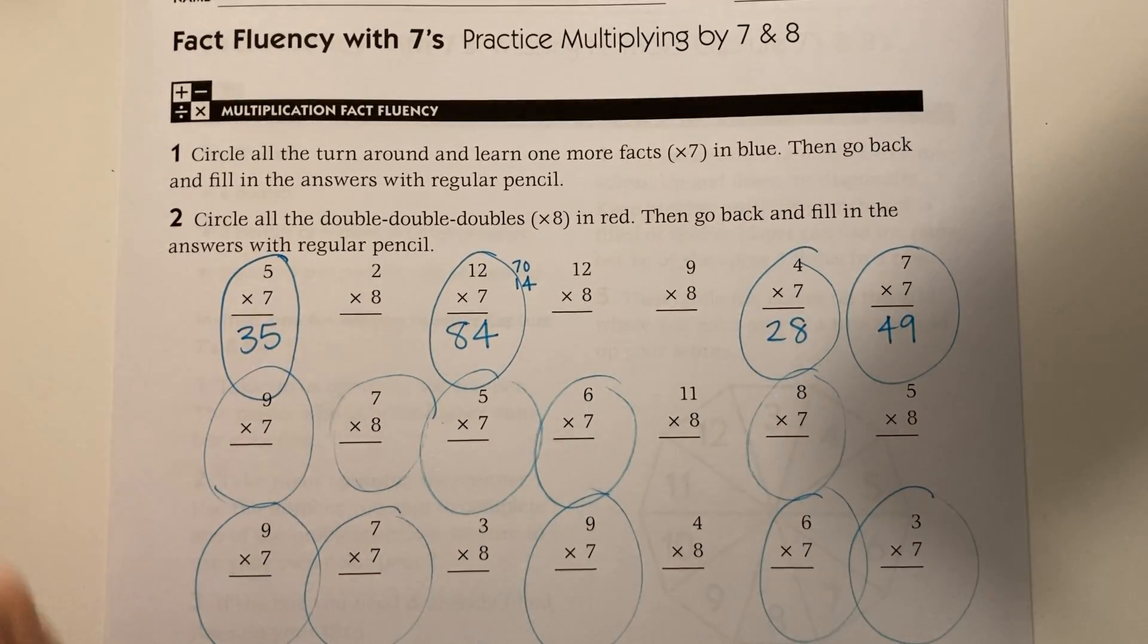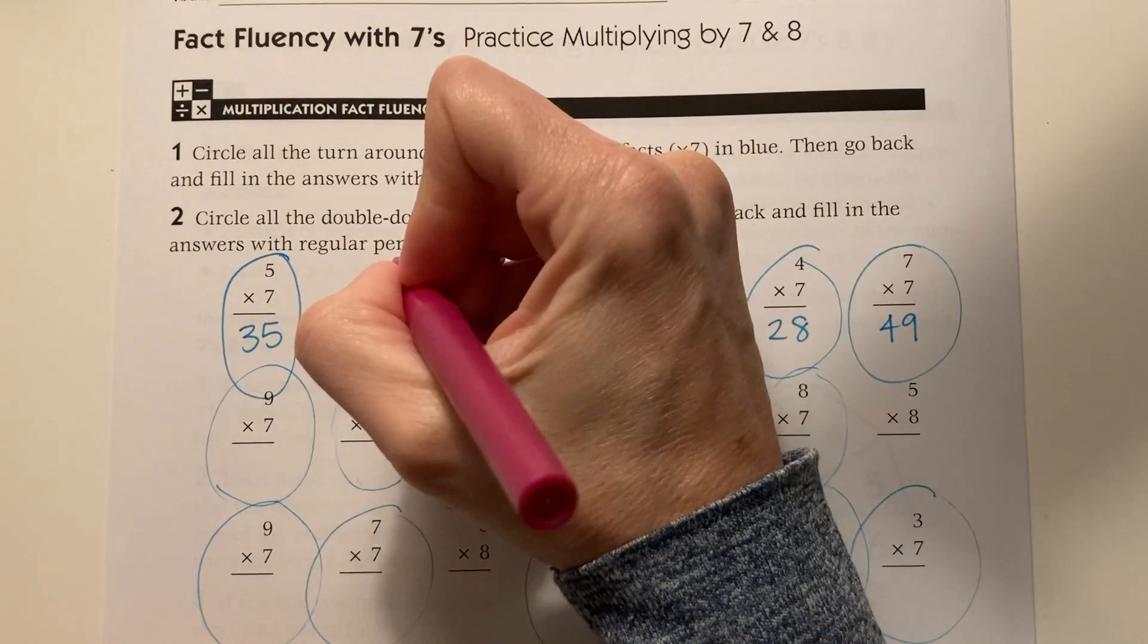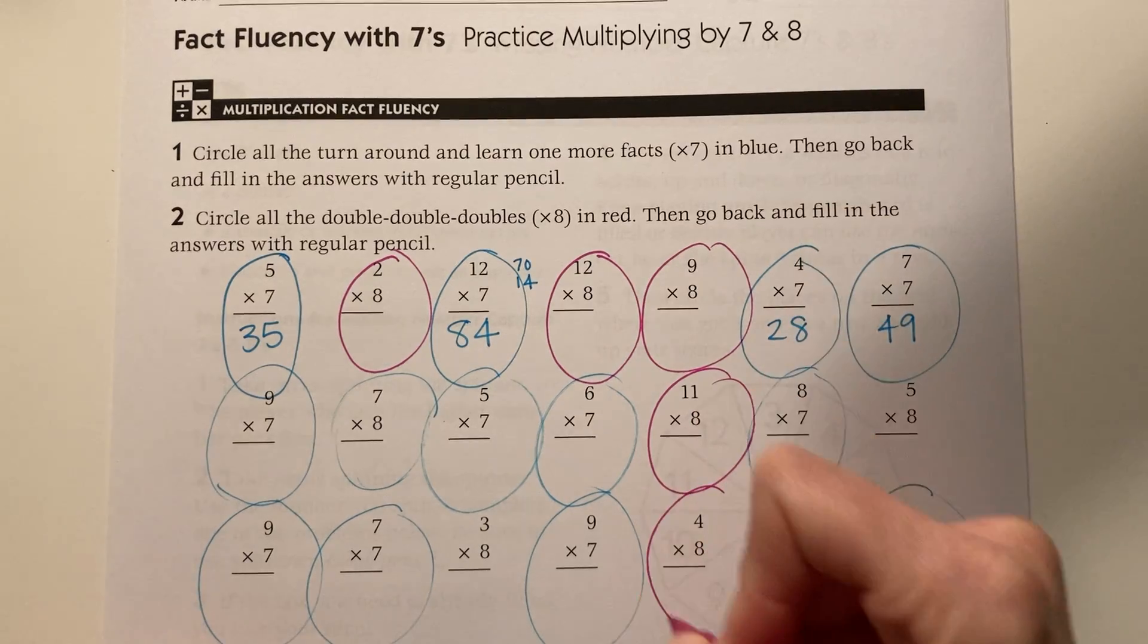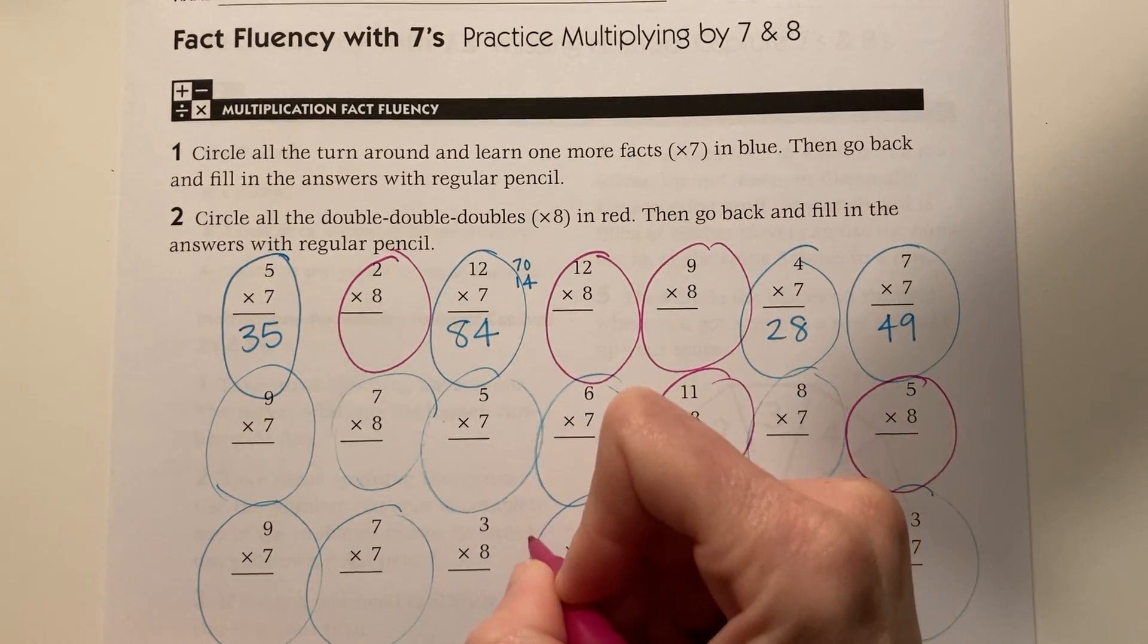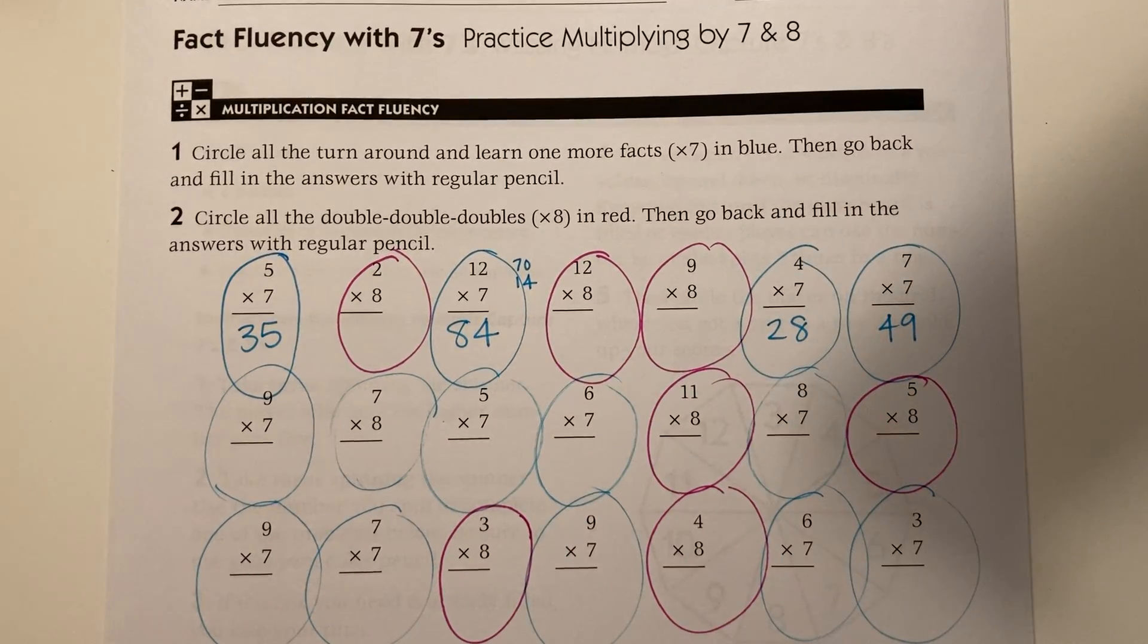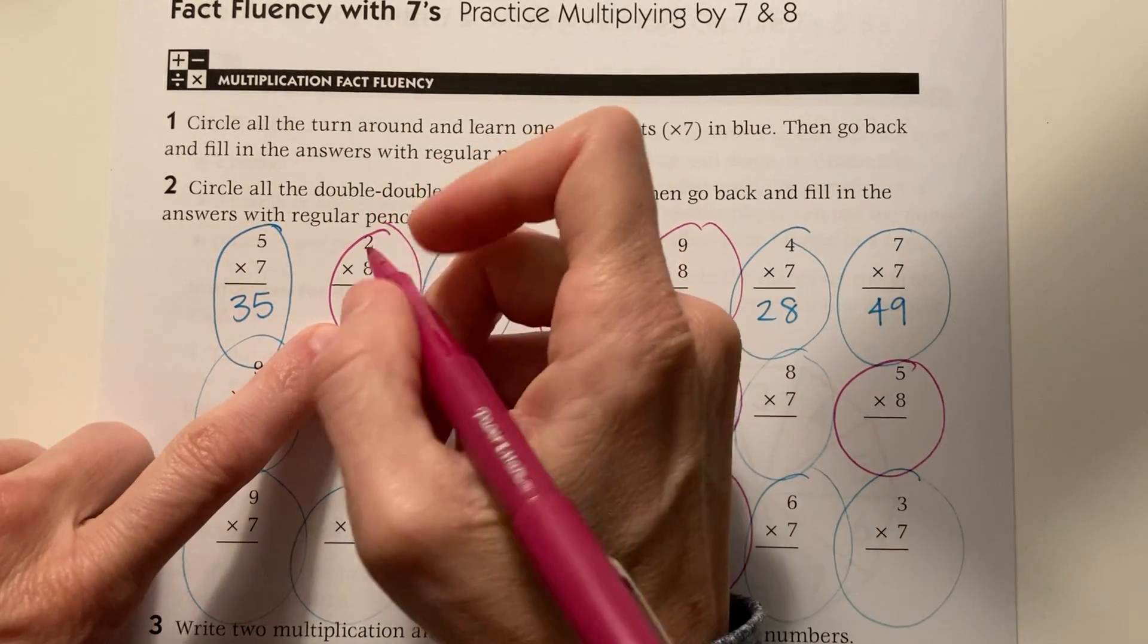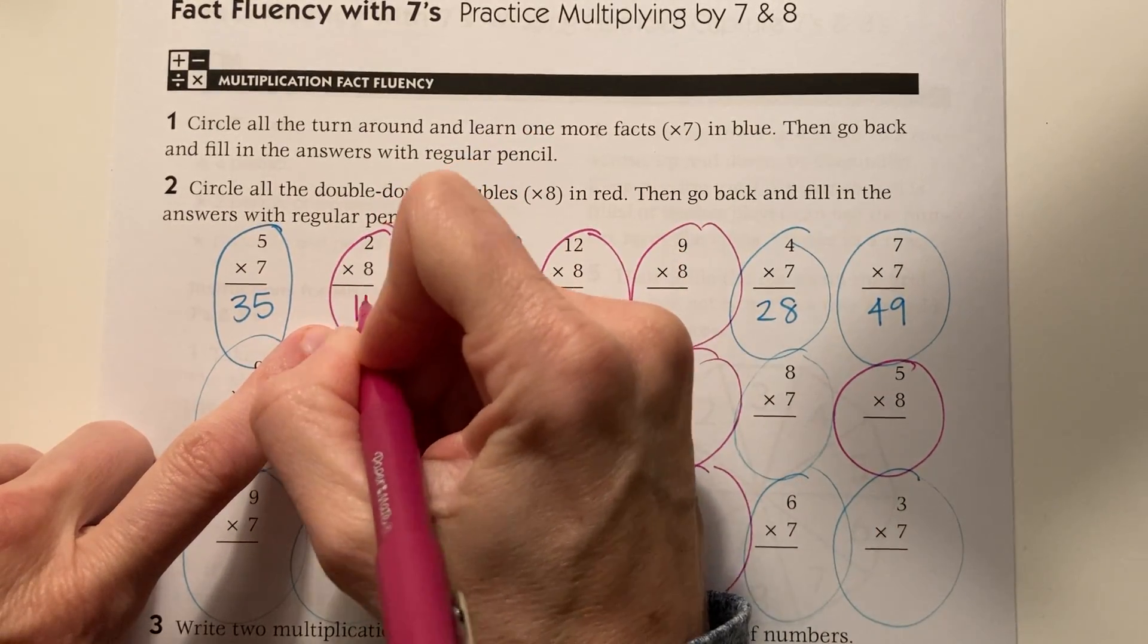Then once you've done all those, circle all your eights and go back and fill them in. And the eights, you can use the double double double strategy. If I double two, I get four. Double that, I get eight. Double that, sixteen.